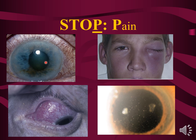We've already discussed angle closure, orbital cellulitis, and iritis. The new entity is scleritis. In scleritis you see redness of the sclera — and in this patient you can see whiteness where the conjunctiva has been eroded away by the inflammatory response. This is critical to recognize because the patient could have further erosion through the sclera and extrusion of intraocular contents. Pain should strongly increase your index of suspicion for angle closure, orbital cellulitis, scleritis, and iritis.